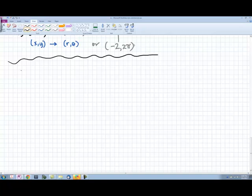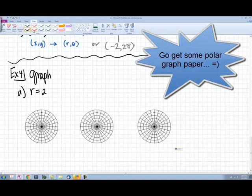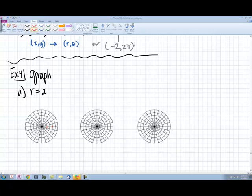Let's graph r equals 2. That means the radius is 2, so I want all the points that have a radius equal to 2. Every single point that is 2 units away is going to lie on the circle with radius 2. So this is what you should sketch.